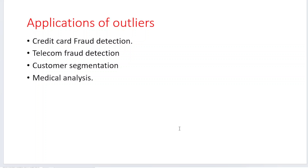The applications of outlier analysis include credit card fraud detection, telecom fraud detection, customer segmentation, and medical analysis. In credit card fraud detection, a normal customer typically swipes their card for amounts between 5K to 20K, but a fraudulent customer may make transactions up to 1 lakh or 10 lakhs. We analyze the normal versus abnormal behavior and consider the fraud behavior as an outlier.